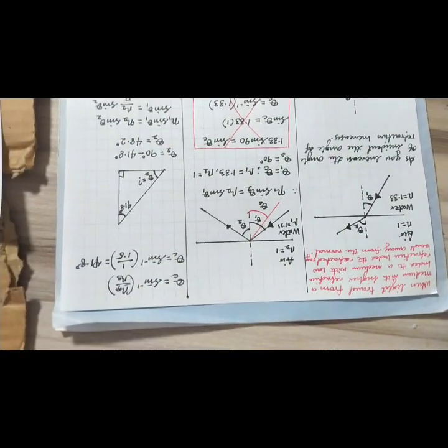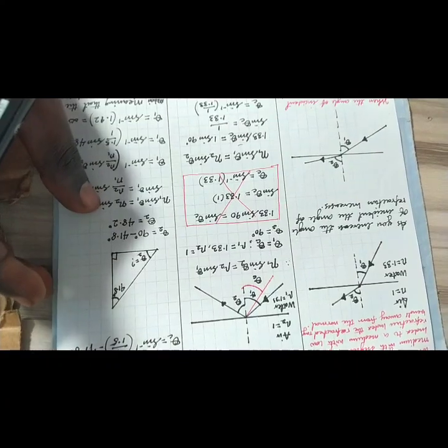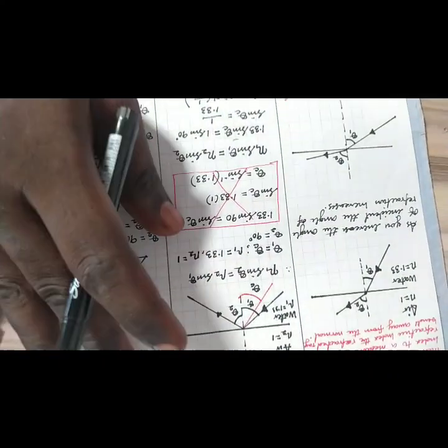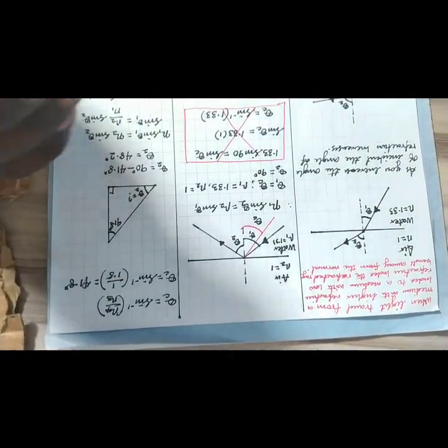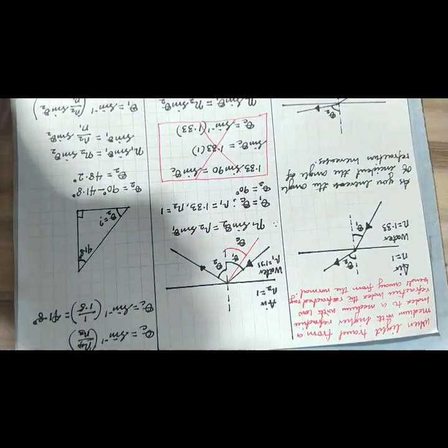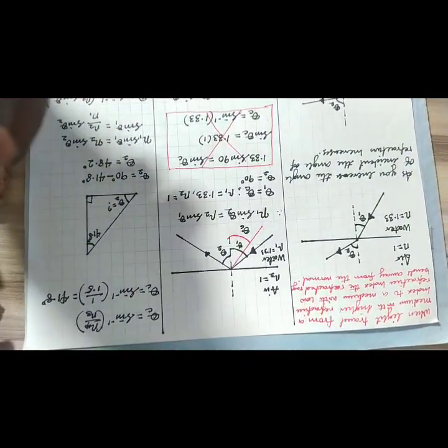The next thing you need to know before starting the experiment is total internal reflection. Since morning, what we have been considering is light traveling from a less dense medium to a denser medium. For total internal reflection to occur, you need to consider light traveling from a denser medium to a less dense medium — that is, from a medium with high refractive index to one with low refractive index, for example light traveling from glass to air or from water to air.